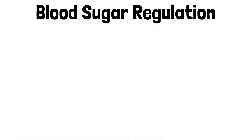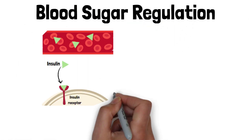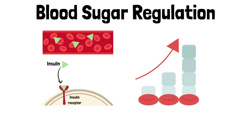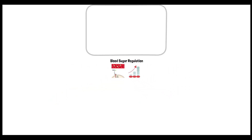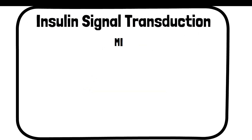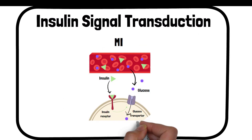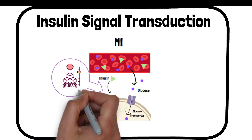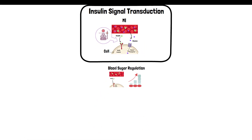Inositol plays a role in insulin signal transduction, helping manage insulin resistance and thereby aiding in blood sugar control, which is crucial for people with diabetes or at risk of developing diabetes. Specifically, myoinositol (MI) is integral in insulin signal transduction — the process by which cells respond to insulin. By enhancing this signaling pathway, inositol helps cells more effectively respond to insulin, which is crucial for maintaining normal blood sugar levels.